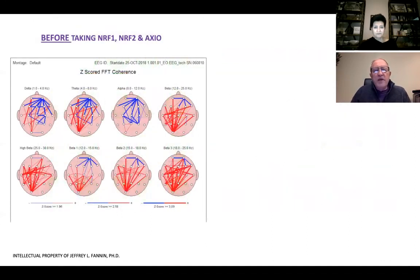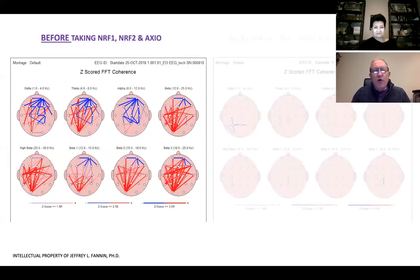One of the key components is when we look at coherence—how the body processes energy and information. We look at his coherence before and all the red and blue, that's not good basically. I won't take time to explain what that actually means, but it's not good. After he'd been on the nrf1, nrf2, and axio for 12 days, we see this.